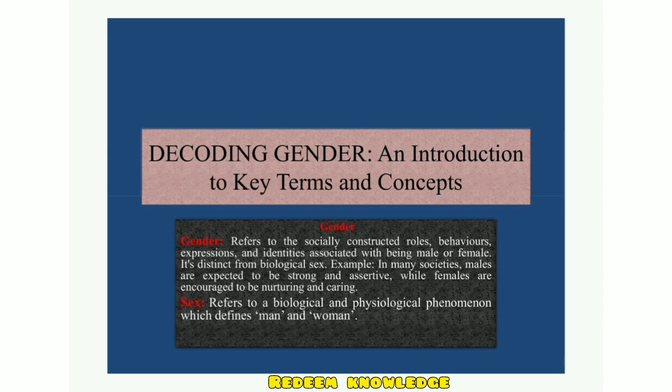That is why we say that gender is socially constructed — samaj dwara yeh define hota hai ki as a male aap kya kar sakte hain aur as a female kya kar sakti hain. One important thing to remember: gender is distinct from biological sex. Gender aur sex — these are two different terms.